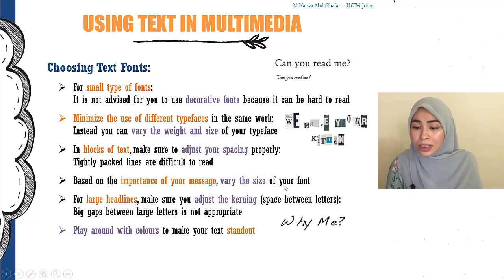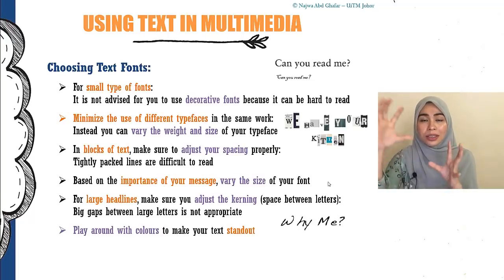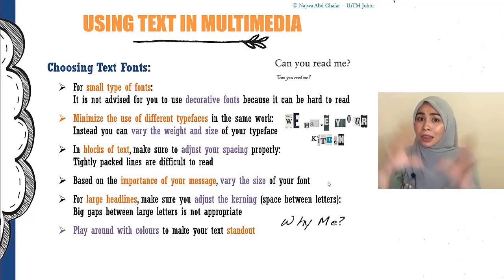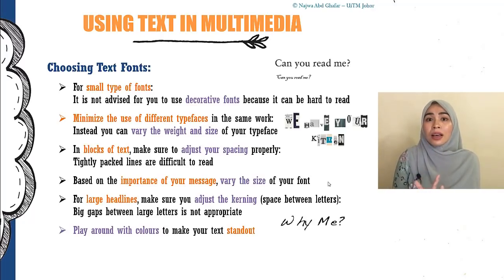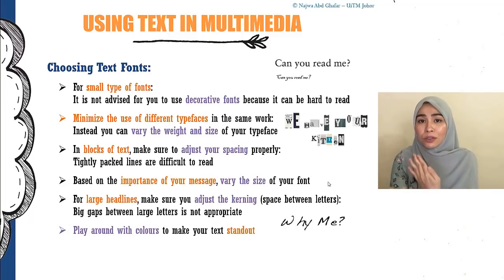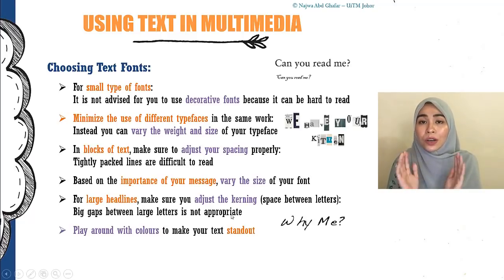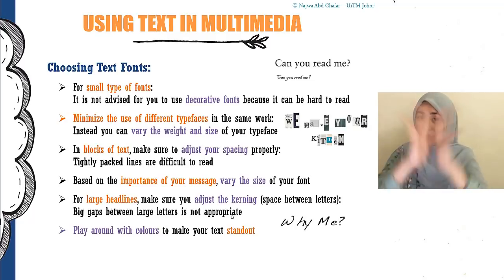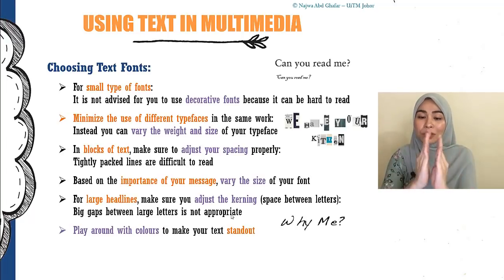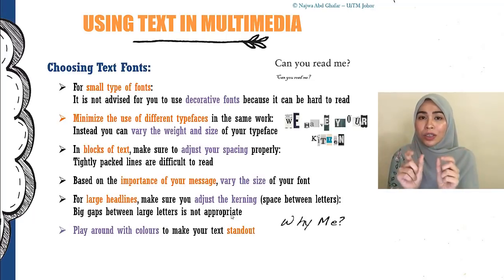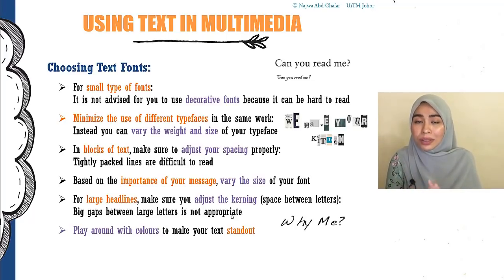Based on the importance of your message, vary the size of your font. For a poster, decide which text is most important — the title introducing what you're selling should be the biggest, and maybe the price is also highlighted. For large headlines, make sure you adjust the kerning. Big gaps within large letters are not appropriate — on a billboard, for example, if the spacing between letters is too wide, people might think it's a different word. Also play around with colors to make your text stand out — for instance, using colors to highlight keywords.